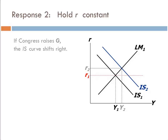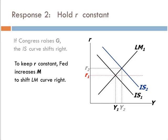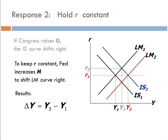What if the Fed decides to hold the real interest rate constant? We still have an increase in the IS curve from the raise in G. But the Fed wants to keep interest rates from rising, so it has to accommodate that increase by increasing the money supply. The LM curve shifts to the right. We end up with delta Y equal to 1 over (1 minus MPC) times delta G — the full Keynesian cross prediction — because interest rates stay the same, so we don't give anything back in terms of lower investment.